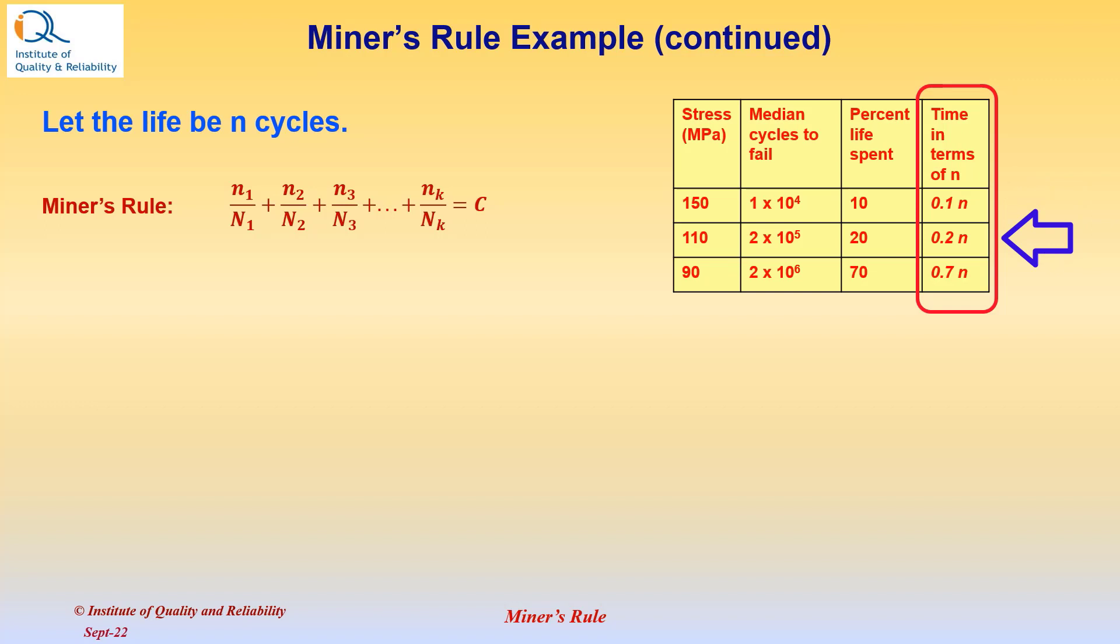At 110, the item spends 20% of the time or 0.2n. And at 90 MPa, it spends 70% or 0.7n.